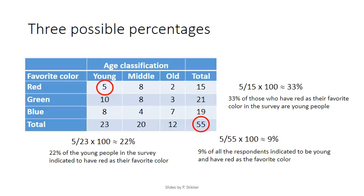Most textbooks suggest using the total of the independent variable. In this case, the independent variable was age classification, so we would use 23 for young people, 20 for middle-aged, and 12 for old. This way it becomes easier to compare the different age classifications with each other. If you have another table like this from a different data set, you might want to use the grand total so you can compare percentages between the two tables.